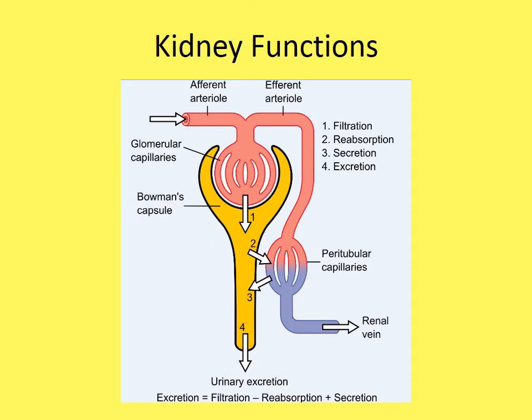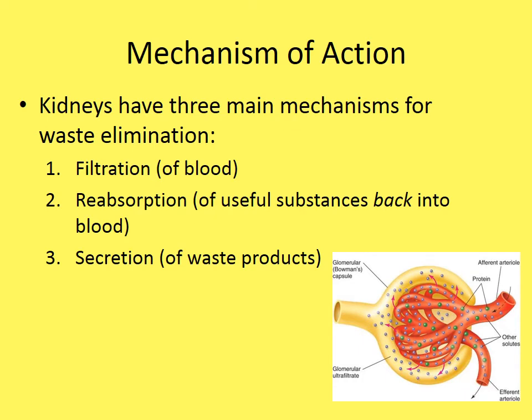Now let's discuss how filtration, reabsorption, secretion, and excretion actually work. The kidneys have three main mechanisms for waste elimination. First, filtration of blood — which happens in the glomerulus. Plasma leaves the glomerular capillaries and enters the Bowman's capsule, becoming glomerular filtrate, beginning the process of urine production.